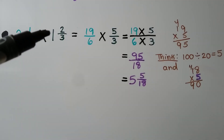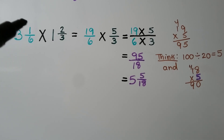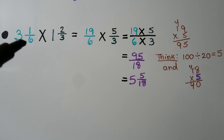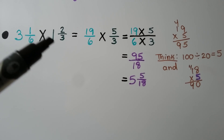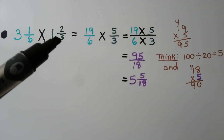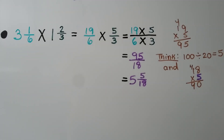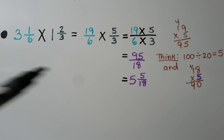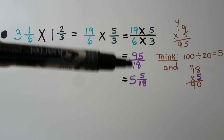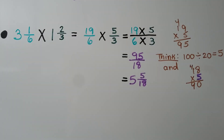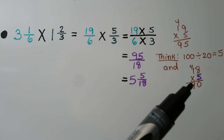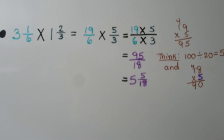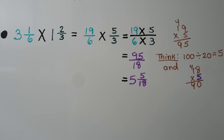For 3 and 1 sixth times 1 and 2 thirds, we rename: 3 times 6 is 18 plus 1 is 19, so 19 sixths. And 1 times 3 is 3 plus 2 is 5, so 5 thirds. Now we have 19 sixths times 5 thirds. 19 times 5 is 95, and 6 times 3 is 18, giving us 95 eighteenths. We estimate: 100 divided by 20 is 5, so we try 18 times 5 equals 90, with 5 left over. That means 5 and 5 eighteenths.